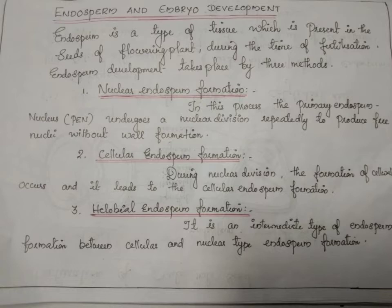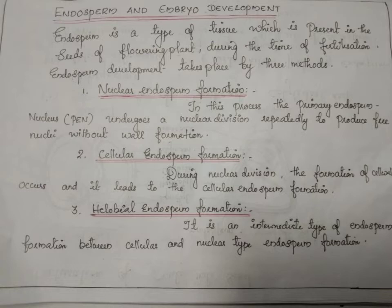The third type of endosperm development is helobial endosperm formation. It is intermediate between cellular and nuclear types. One half of the endosperm is nuclear type and the other half is cellular type. These are the three methods of endosperm formation: nuclear, cellular, and helobial. In the first, only nuclear division occurs; in the second, cell wall formation occurs; and the third is intermediate between the two.